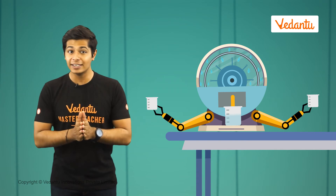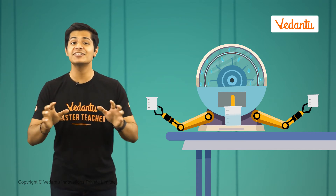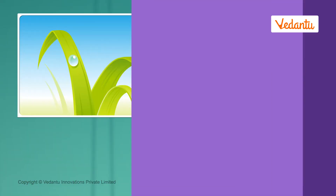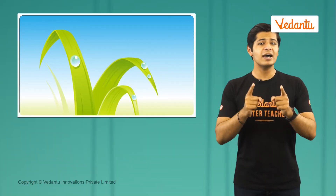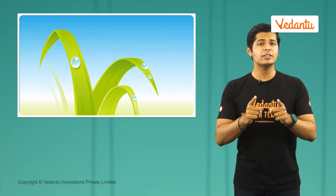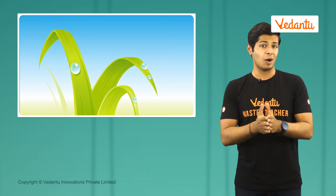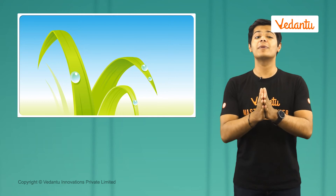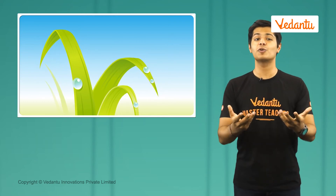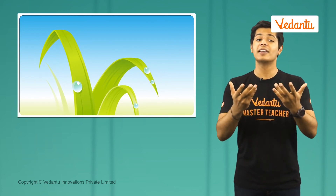Did you know early in the morning you might have seen water droplets on grass? It's because the water vapor in the air condenses due to the low temperature in the morning.